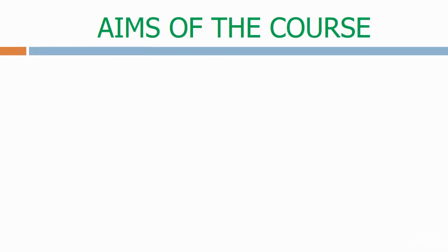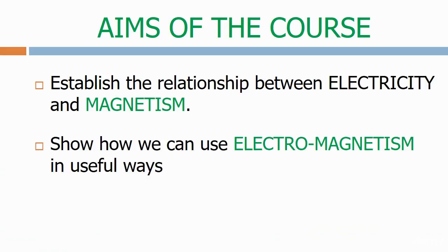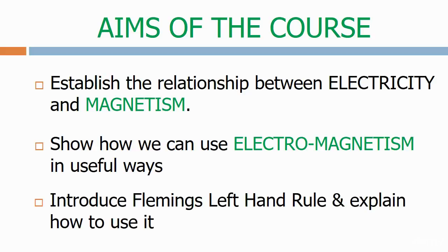The aims of the course today are to establish the relationship between electricity and magnetism, show how we can use electromagnetism in useful ways, and introduce Fleming's left hand rule and explain how to use it.